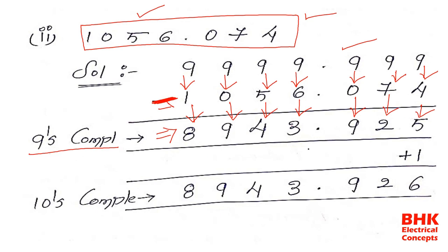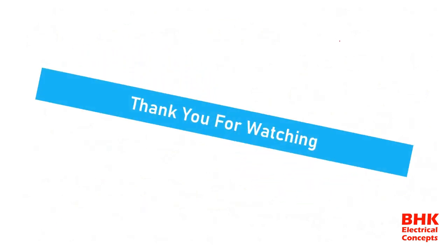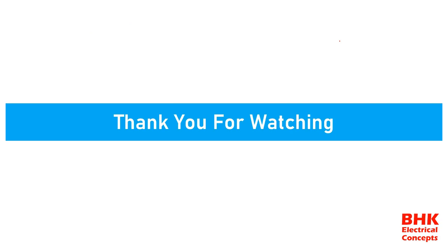We have the nines complement, but we require the tens complement, so we add plus 1 to the nines complement. Here, 5 plus 1 gives 6, and all the remaining digits stay the same. This result represents the tens complement of 1056.074, which is 8943.926. Thank you for watching, and please subscribe to the channel for more updates.